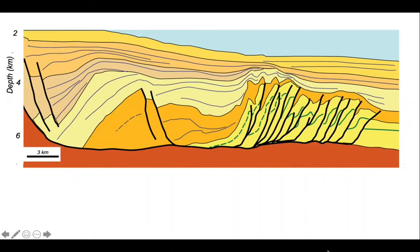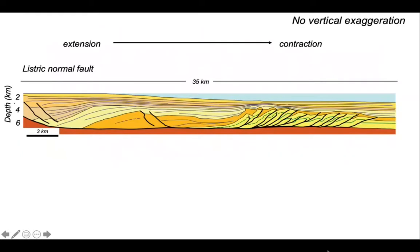Let's try and make this more realistic by removing that vertical exaggeration. It's always better to do structural geology with the vertical and horizontal scales equal. What we can see on this profile now is a thrust belt developed on the right-hand side, linked to a large listric normal fault back to the left. You can see the thrust belt is downslope and the listric normal fault is linking back upslope.